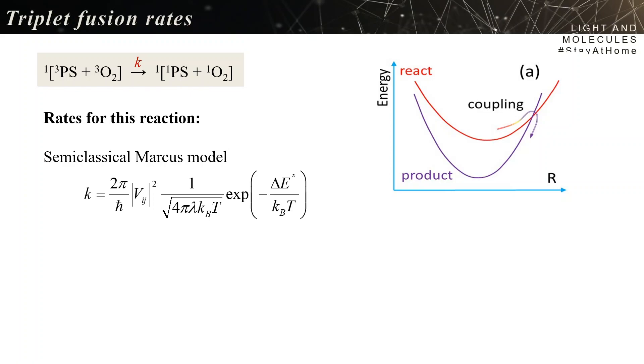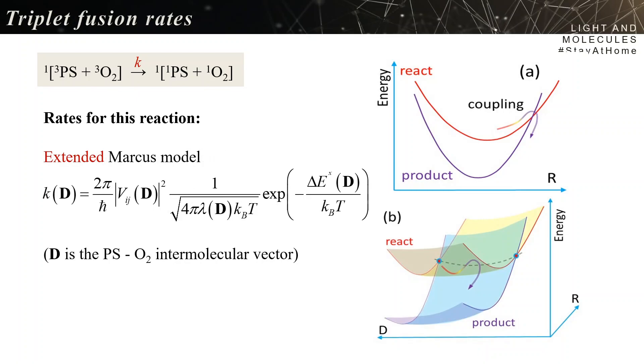One problem to apply the semi-classical model here is that you have the distance between the two monomers, between the PS and the O2. This distance doesn't couple, and then at the end, for this reaction, what we have are parabolic sheets with this parabola moving parallel to each other along the d direction, the direction of the PS-O2 intermolecular vector.